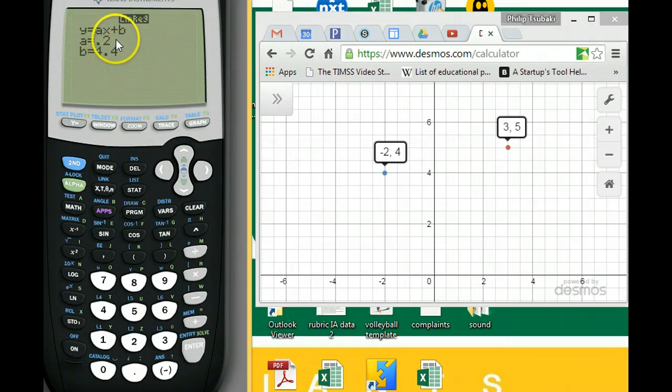So it has already given us the equation for a line which goes through these two points. The equation would be y equals 0.2x plus 4.4, 0.2 being the slope or the gradient, and 4.4 being the y-intercept.